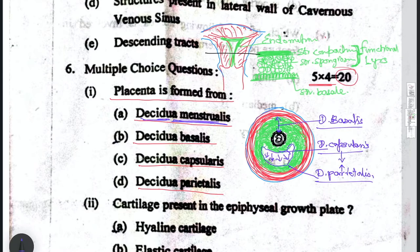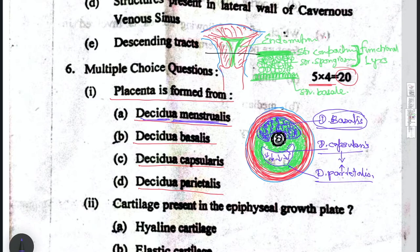You have to tell that the placenta is formed from the decidua basalis — the portion of the decidua over which the embryo is resting, between the embryo and the maternal surface. Remember, decidua basalis is the one which is going to form the placenta. So the answer here will be decidua basalis.